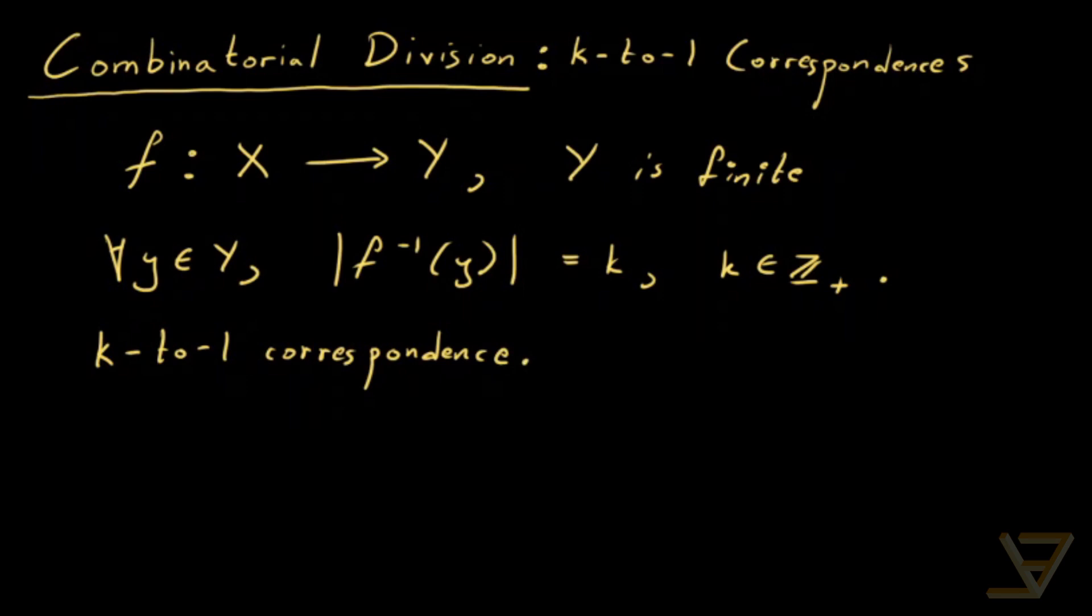Because, in essence, what it means is that X is cut up into groups of k that are disjoint, and each of those collections maps to a single y in capital Y.